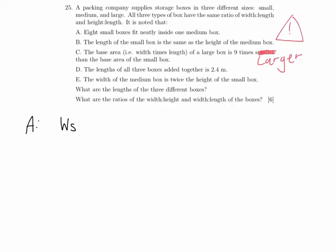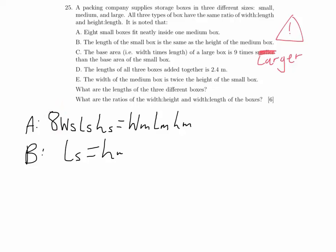We've been given five statements, A to E, and we're going to go through each statement working out what it means. Statement A is that eight small boxes fit inside one medium box — eight small boxes fit neatly inside one medium box. That means the volume — the width times the length times the height — of eight small boxes equals one medium box.